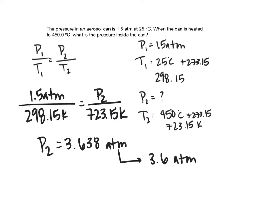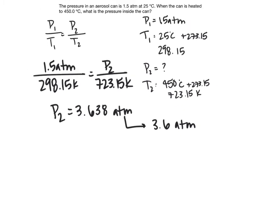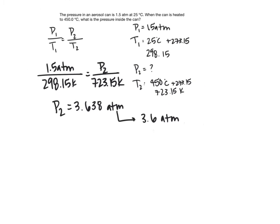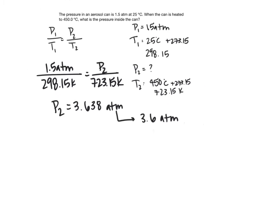You could also have isolated for P2 from the start: P2 equals P1 times T2 divided by T1. Rearranging this way gives the exact same answer.